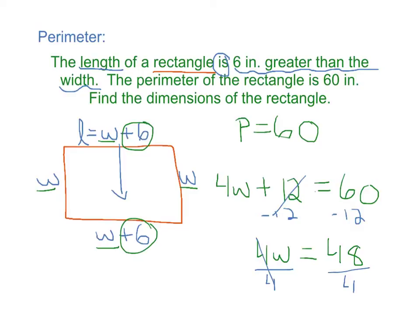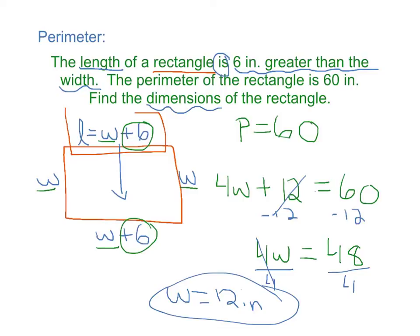So W in this case equals 12 inches. But it does say find the dimensions, which means we have to find the length as well. Go back to this up here. The length is 6 more than the width. So the length is 6 more than the width, which is 12. So the length is 18.